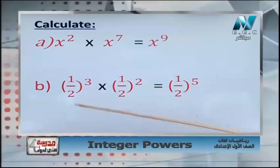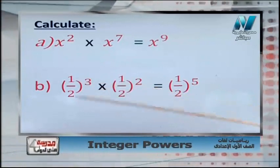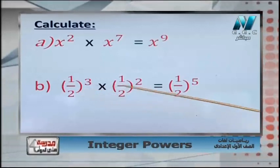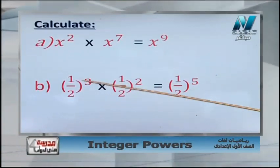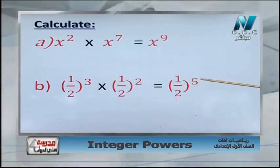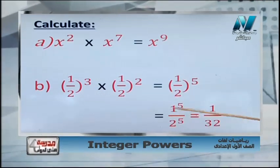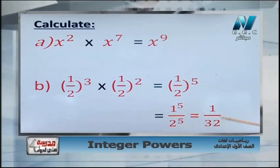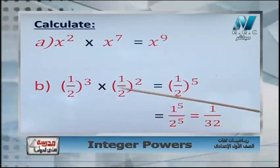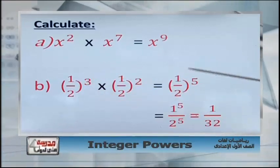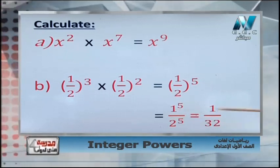Rational numbers example: half to the power 3, times half to the power 2. Same base — half and half — so we add the powers: 3 plus 2 equals 5, giving half to the power 5. Then distribute 5 over numerator and denominator: 1 power 5 over 2 power 5, which equals 1 over 32. Check your answer on your calculator to confirm the final answer.